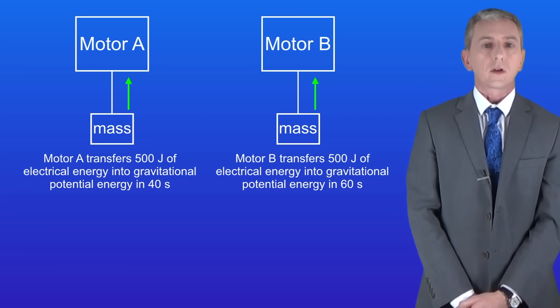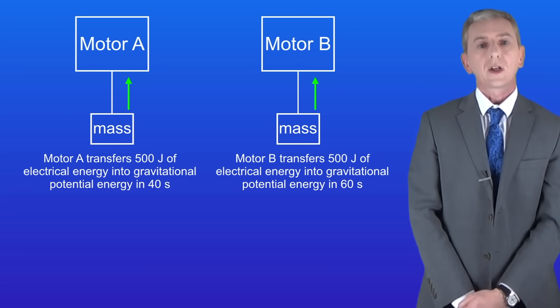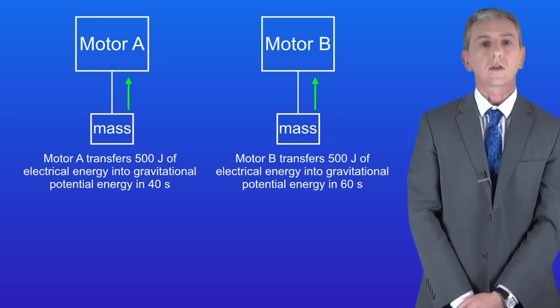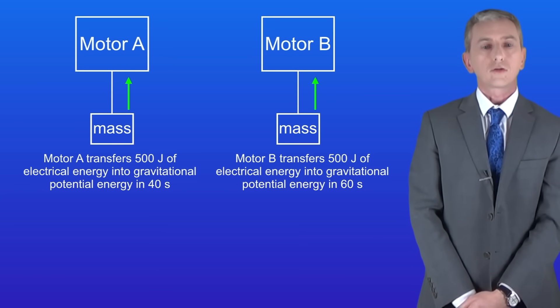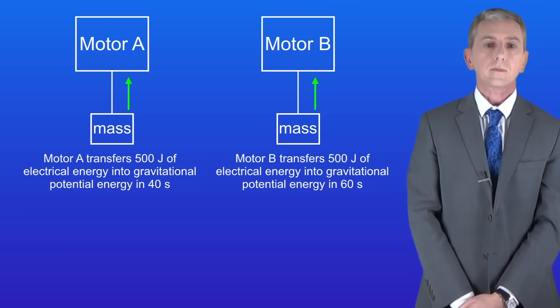Here's another question for you to try. I'm showing you here two motors lifting two identical masses. Motor A transfers 500 joules of electrical energy into gravitational potential energy in 40 seconds. Motor B also transfers 500 joules of energy, but this motor takes 60 seconds. Calculate the power of both motors. So pause the video and try this question yourself.